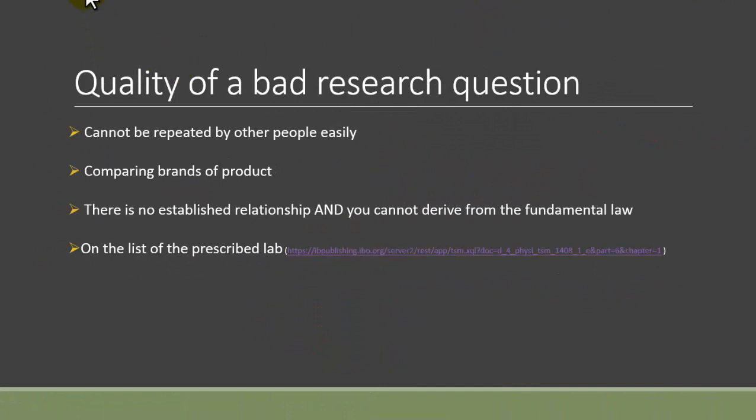Bad research question: the first example is it cannot be repeated by other people easily. This is not just about your research question but also about the methodology that you do. For example, if your experiment involved too much human involvement, maybe in your methodology it relies on how you drop something or how the environment it may be unique, then it may not be a good method or even not a good research question.